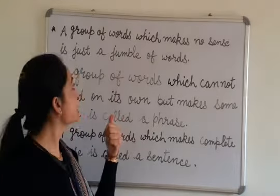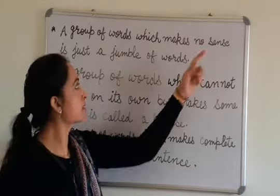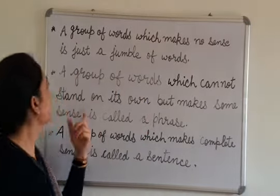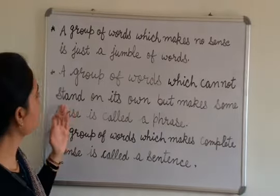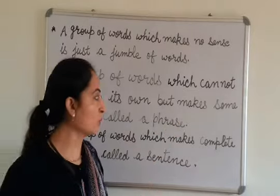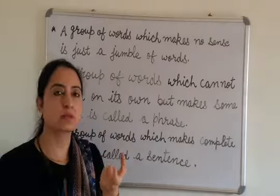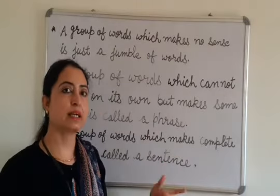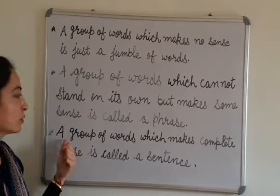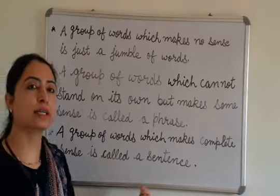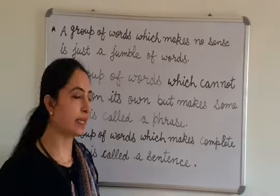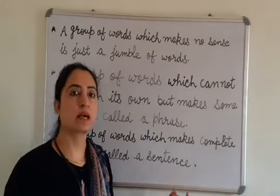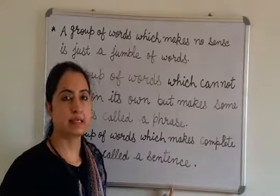Let us revise. A group of words which makes no sense is just a jumble of words. A group of words which cannot stand on its own but makes some sense is called a phrase — for example, in the playground or in the meeting. A group of words which makes complete sense is called a sentence — for example, I am going to school, I am playing, I am going to market.